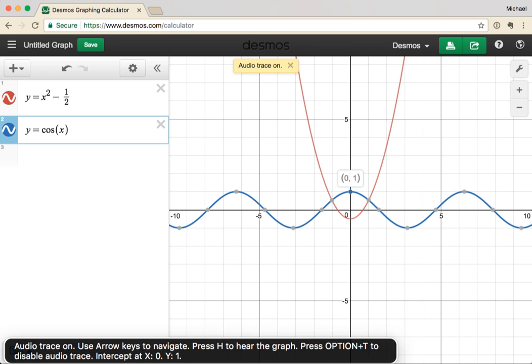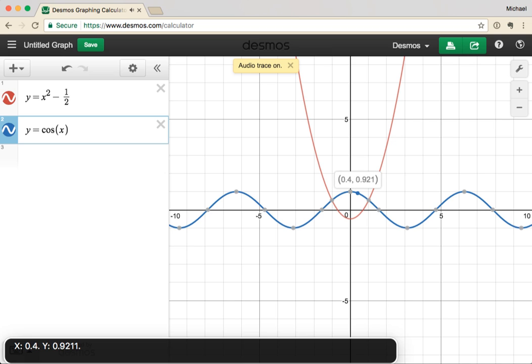Intercept at x 0, y 1. x 0.2, y 0.9801. x 0.4, y 0.9211. Press tab to jump from one point of interest to another.